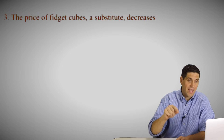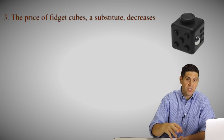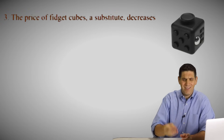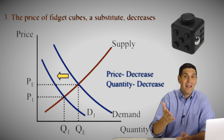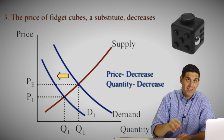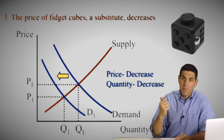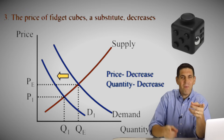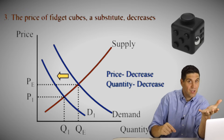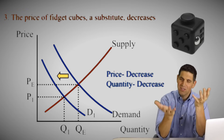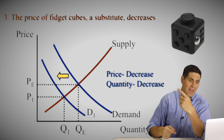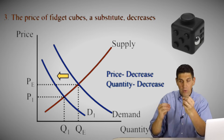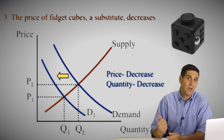Scenario three involves a substitute — fidget cubes — whose price is now really cheap, like three cents. People are going to buy less fidget spinners because they're substitutes for each other. So the demand falls, and price and quantity both go down. When doing these questions, ask yourself: does this affect buyers or producers? The price of fidget cubes decreasing is going to affect buyers first — buyers react first — and that's why it's a decrease in demand.